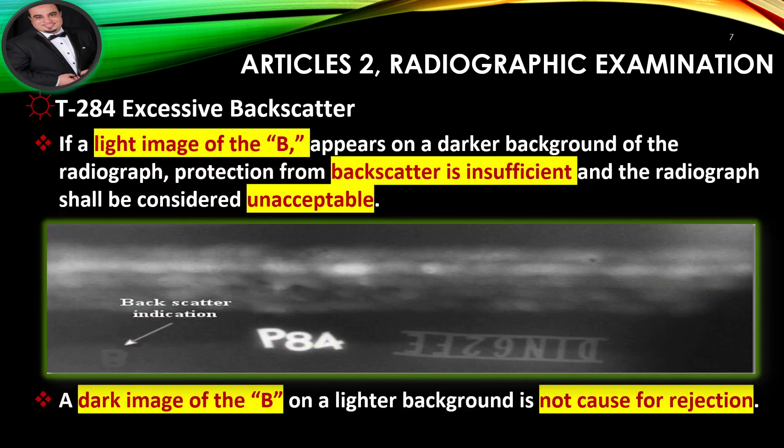Excessive Backscatter: If a light image of the B appears on a darker background of the radiograph, protection from backscatter is insufficient and the radiograph shall be considered unacceptable. A dark image of the B on a lighter background is not cause for rejection.